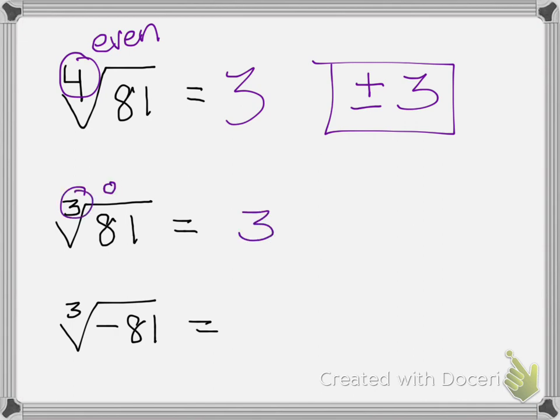Since this is an odd number, my nth root is an odd number, my answer would just be three.